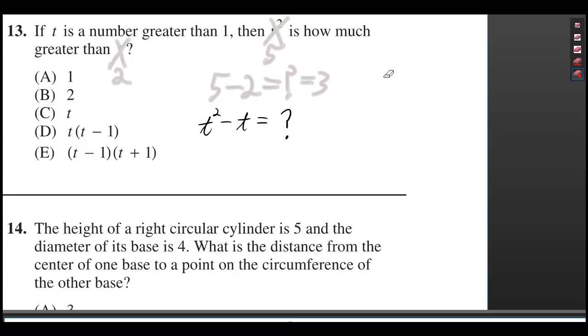But in our example we have t squared and t, so we have to subtract t squared and t. Well we can factor that. t squared and t have a common factor of t.